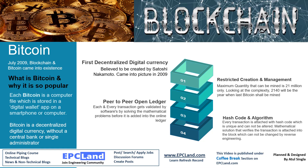Bitcoin is an open ledger where validated transactions are available and can be seen by anybody on the blockchain. The fundamental behind all blockchain transactions is hash code and algorithm. Every transaction is attached with a hash code generated by a hash algorithm. Once miners run this program, they attach a hash code to each transaction — that hash code is a mathematical solution which has verified the transaction, encrypted in such a way that even reverse engineering cannot be done to tamper with the transaction details.